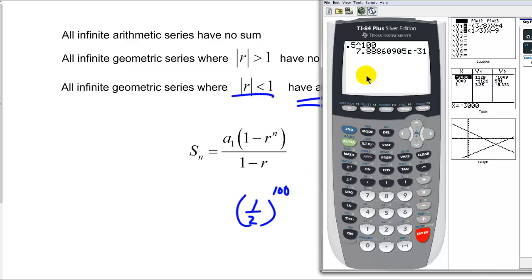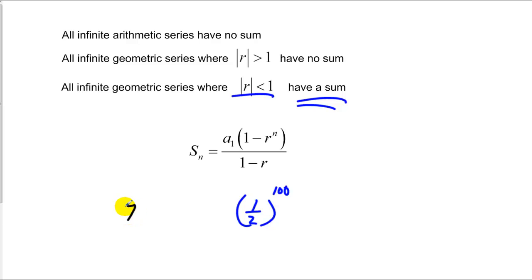You'll notice if I take a half to the hundredth power on a calculator, I end up with seven times ten to the negative thirty-first power. So that's thirty-one zeros in front of the seven. At the hundredth term you're pretty much close to zero, so what's really happening is as I get bigger and bigger with n, this r raised to the nth power gets closer and closer actually to zero. And it really does approach zero.